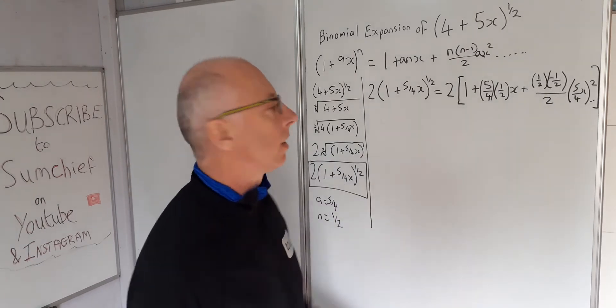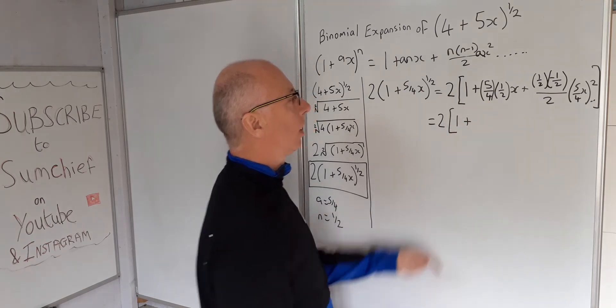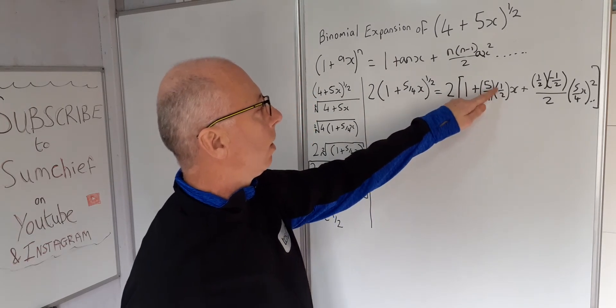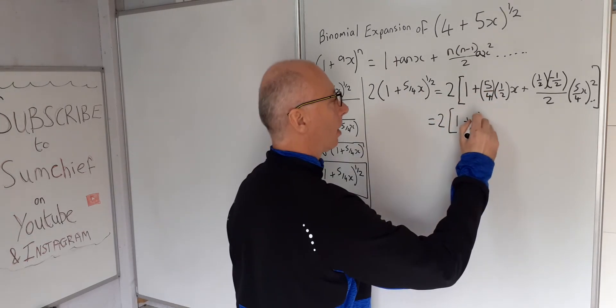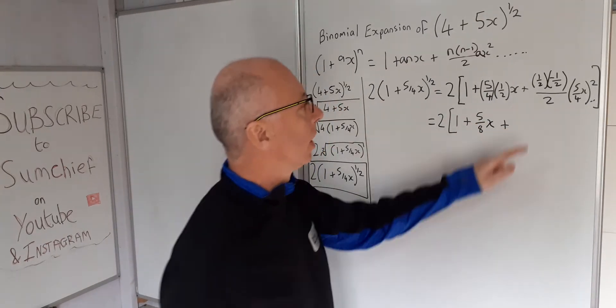Right, let's just break this down even more. So that equals now 2 times 1 plus, 5 over 4 times a half is 5 over 8, x plus.